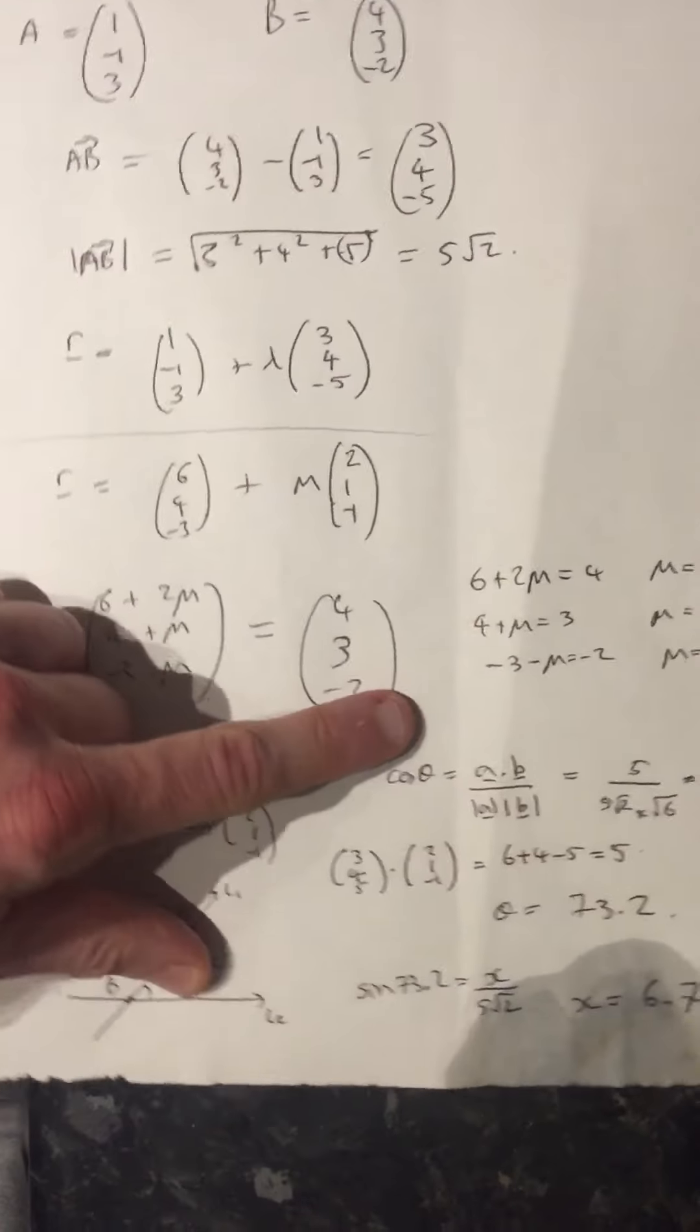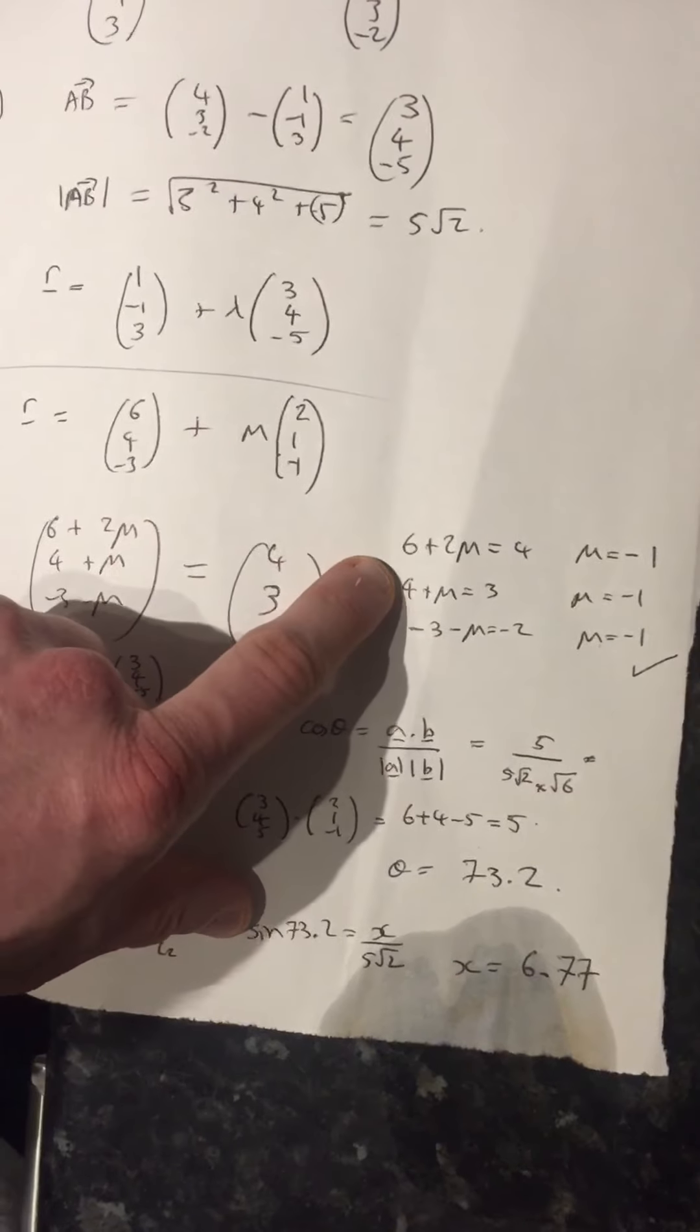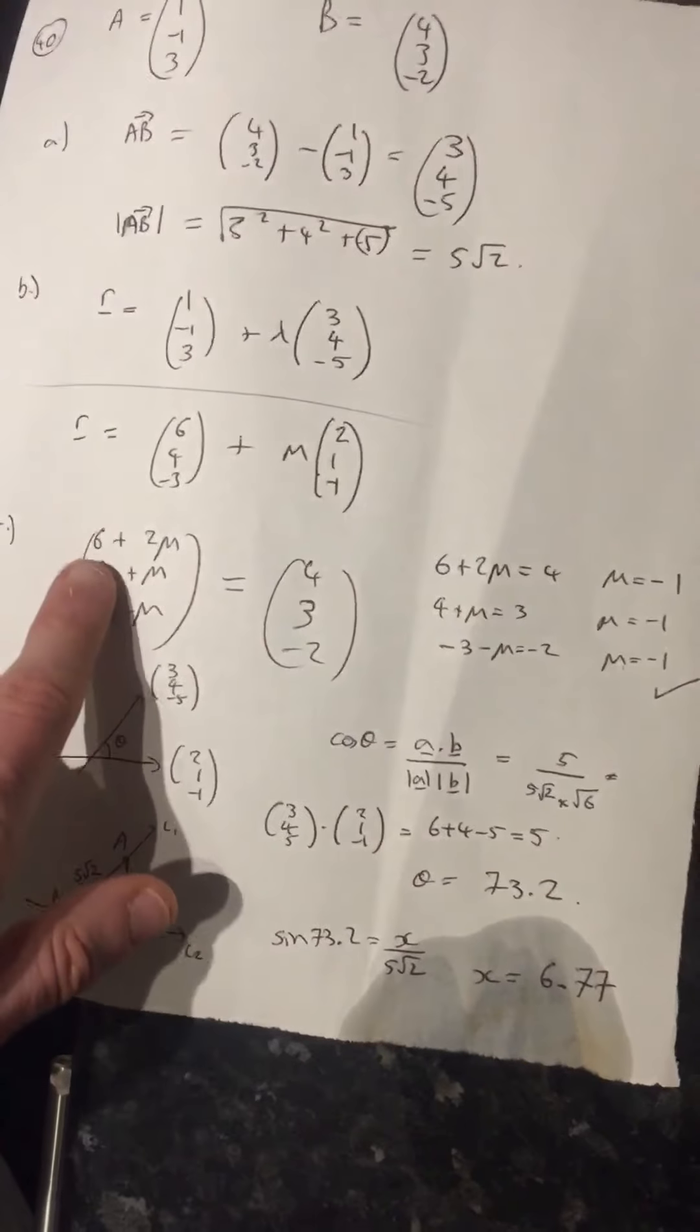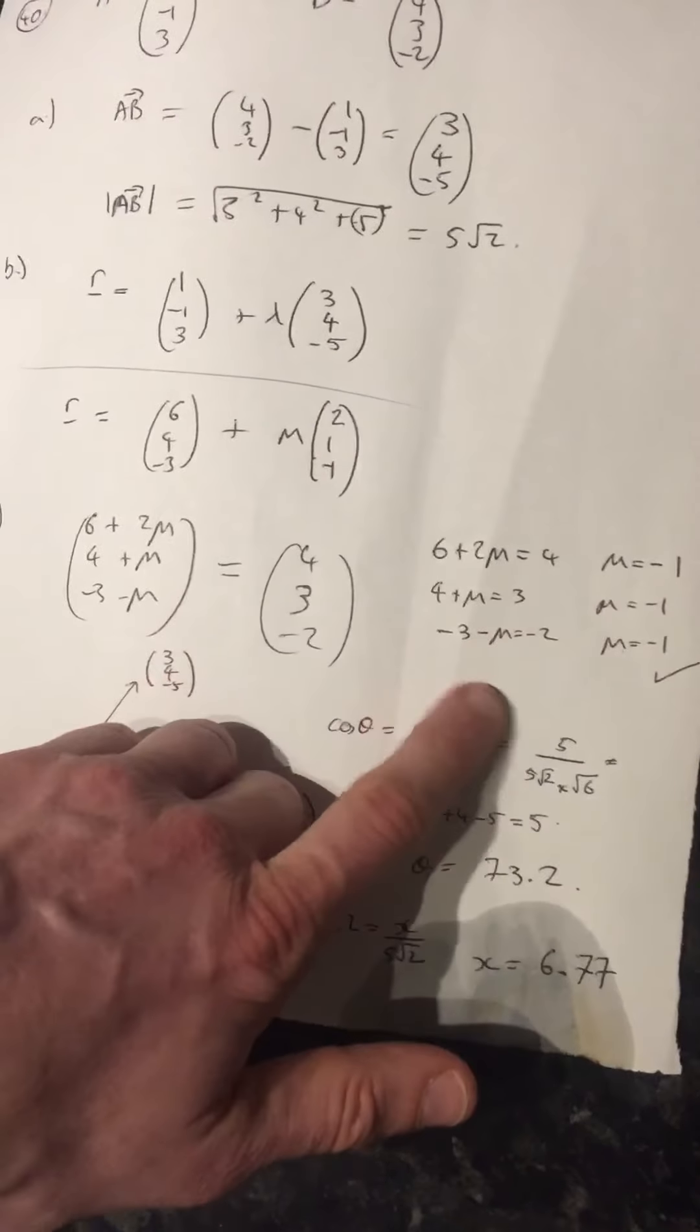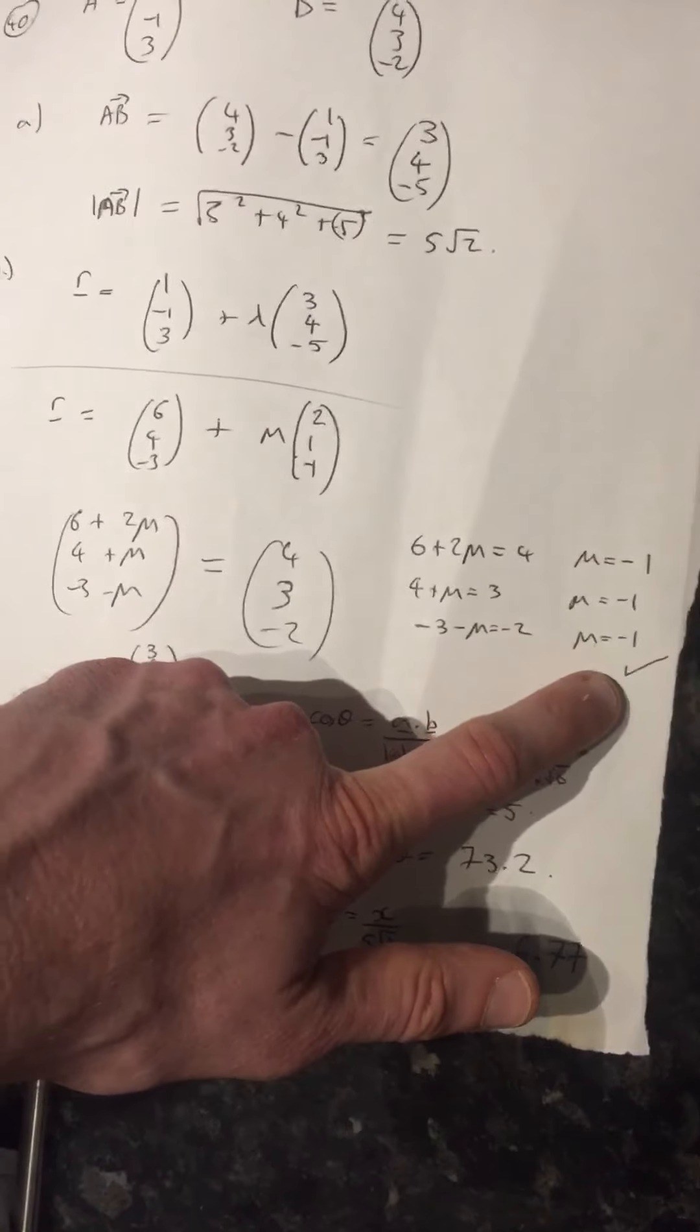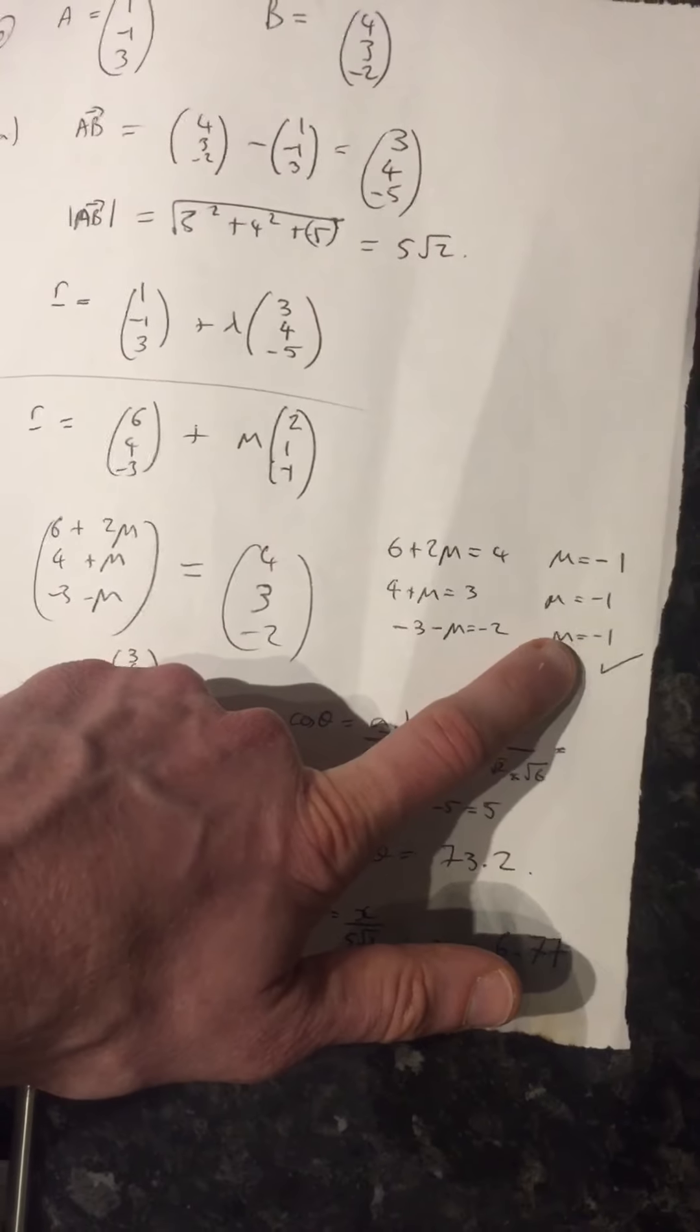And then over here, I wrote down these equations. So you have 6 plus 2 mu equals 4, that means mu has to be minus 1. 4 plus mu equals 3, that means mu has to be minus 1. And the same with the z-coordinate as well. So because mu is minus 1 for all of them, that's consistent. So therefore, B will be on this line where mu is minus 1.